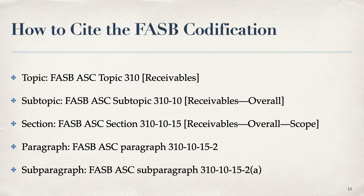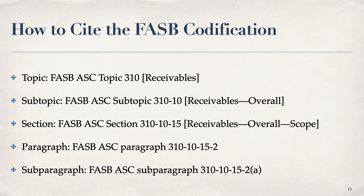The way you cite this: if you just need the topic, you say accounts receivables and notes receivables is shown in FASB ASC Topic 310 — receivables. If you want to be more specific, you'd say FASB ASC Subtopic 310-10, which is receivables-overall. The section would be 310-10-15, receivables-overall scope. Generally we don't go below that in labeling, though we might reference a specific paragraph 2 or subparagraph A. This is how you cite it in professional settings — for an email, working papers, or a document.